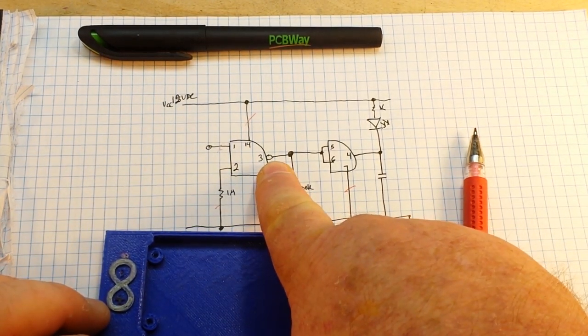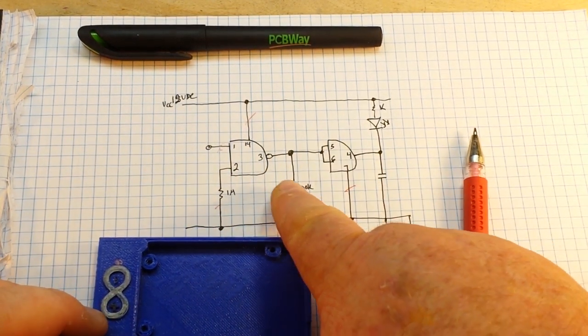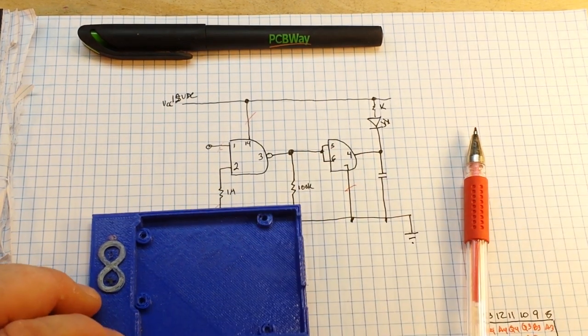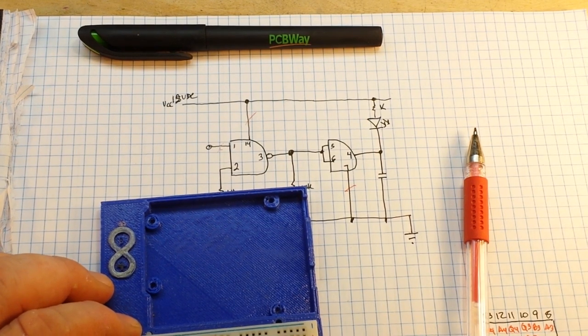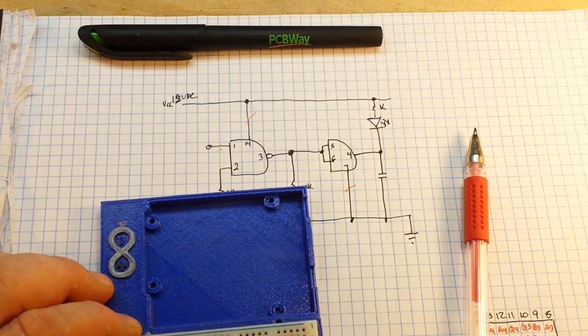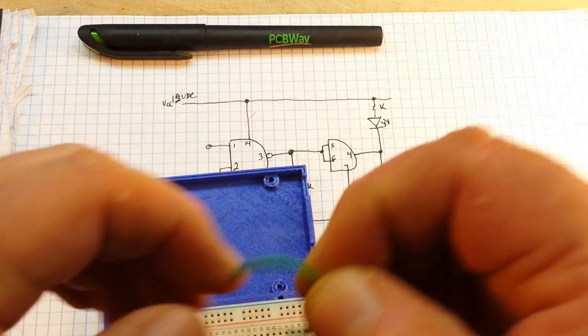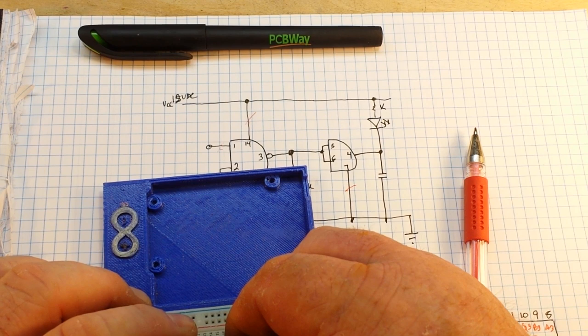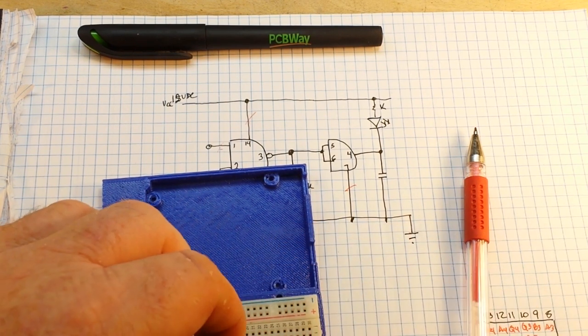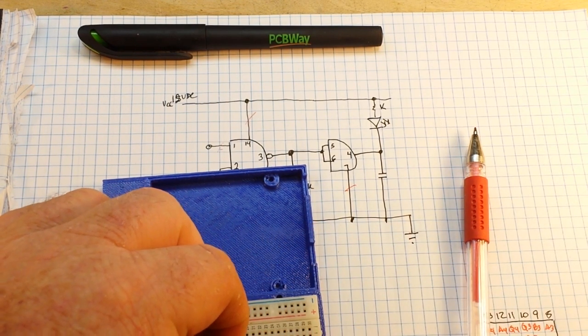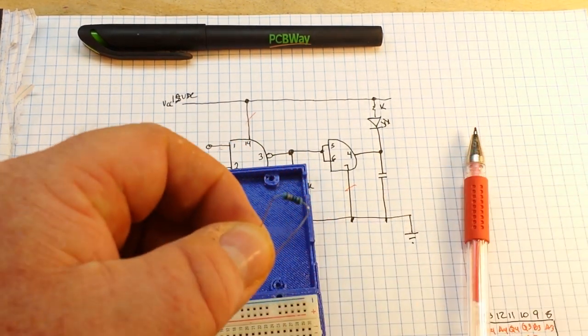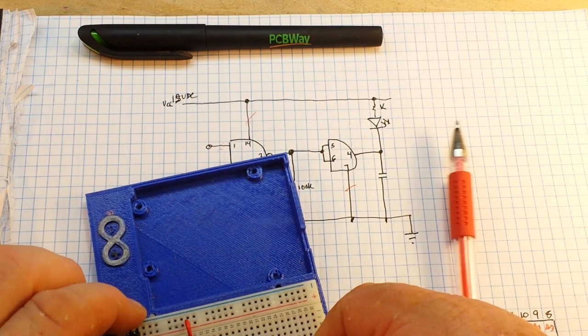Now pin 3 is our inverting output, and it's going to go to a 100k resistor going to ground and then over to our next stage. So I'm just going to take a wire from pin 3 and I'm just going to bring it over here. And then we have our 100k resistor going to ground.